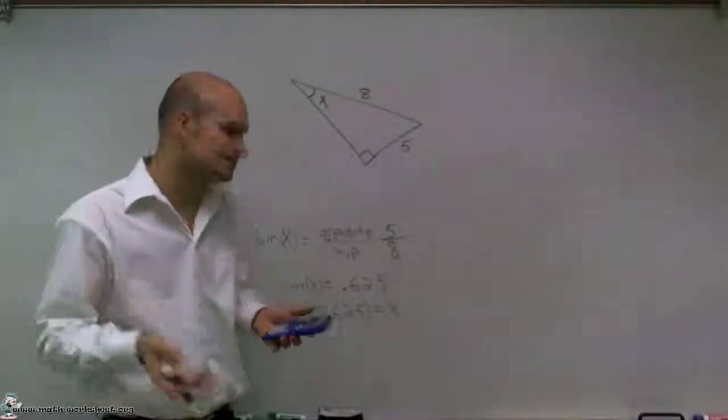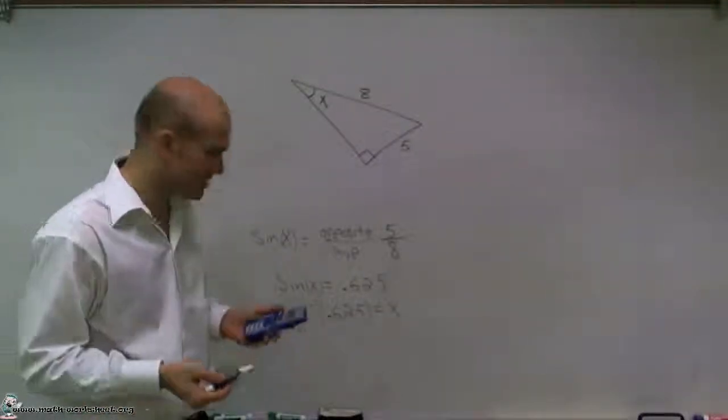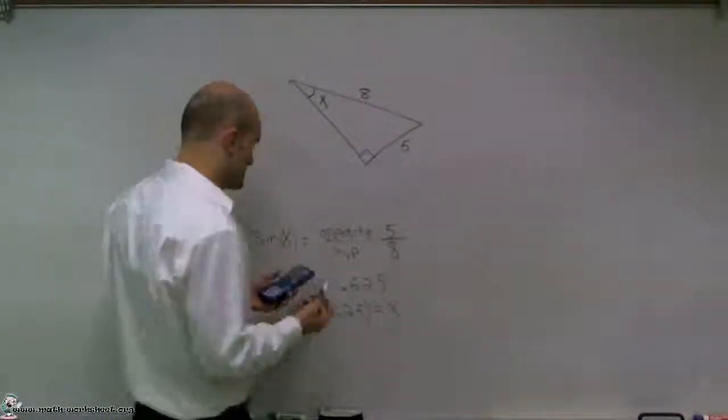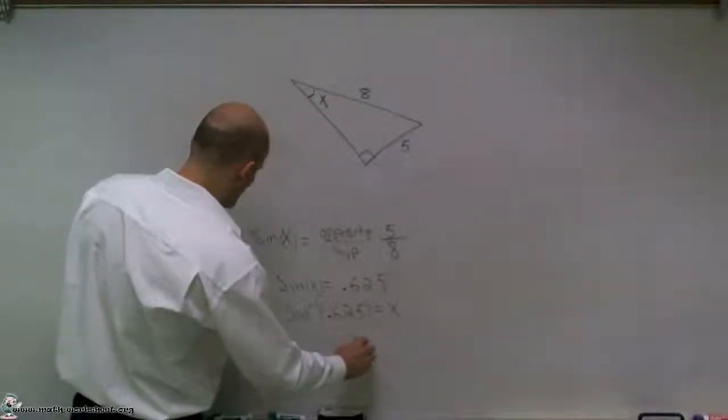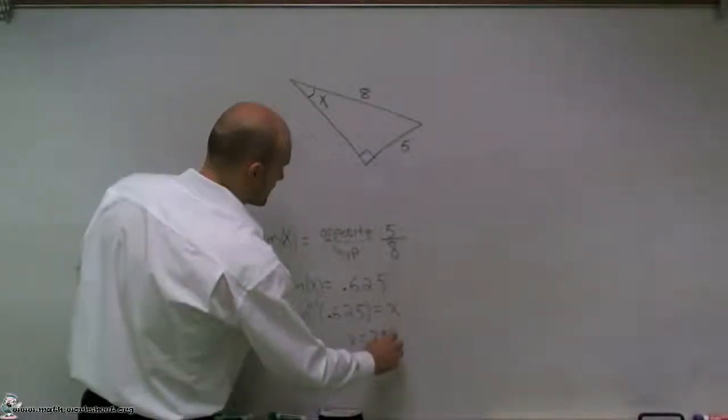And what I get is 38.6. And I believe I want to round it to the nearest degree. So 38.6 is going to round to 39 degrees. So therefore, when I plug this in, I can simply say x equals 39 degrees.